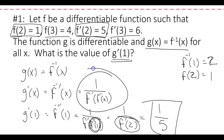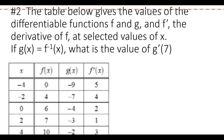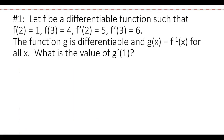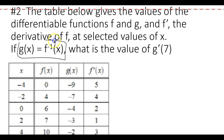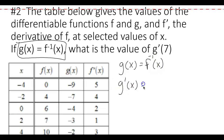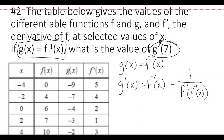Moving on to question 2: the table gives values of differentiable functions f, g, and f' at selected values of x. Once again it's an inverse question — g equals f⁻¹(x). They want to know g'(7). We know g(x) = f⁻¹(x), so g'(x) = 1 over f'(f⁻¹(x)). To find g'(7), we plug 7 into the expression.